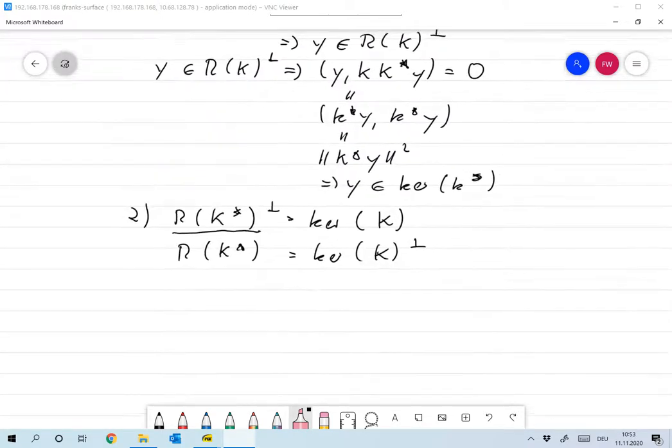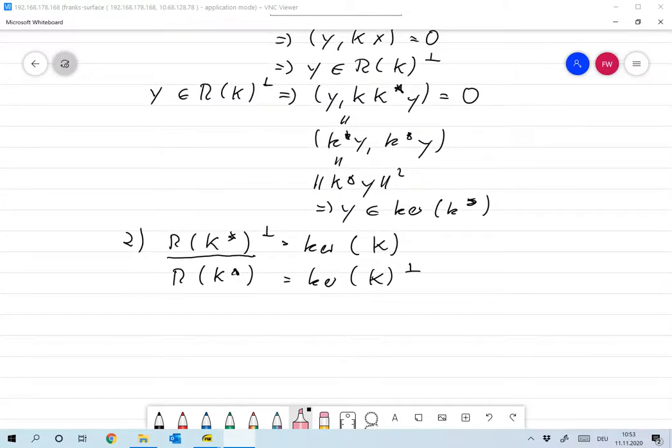So leaving out the closure over there will leave us with the image of an operator with the range of an operator which might be open as we saw. And now we're ready to give some characterisations of the least squares operator.